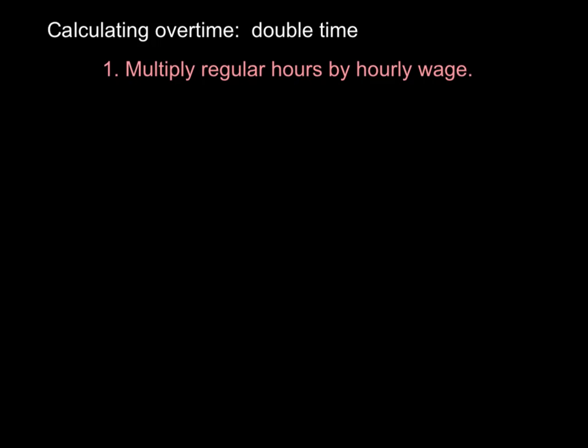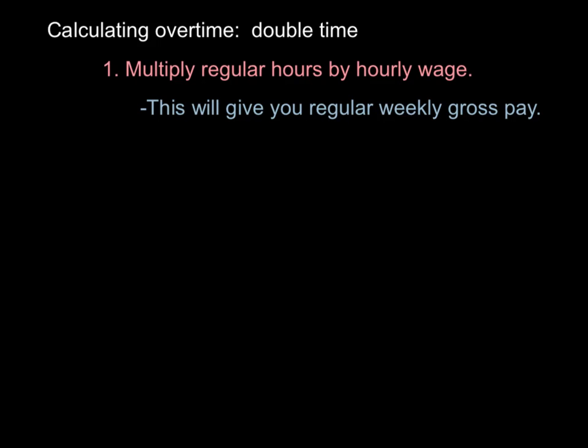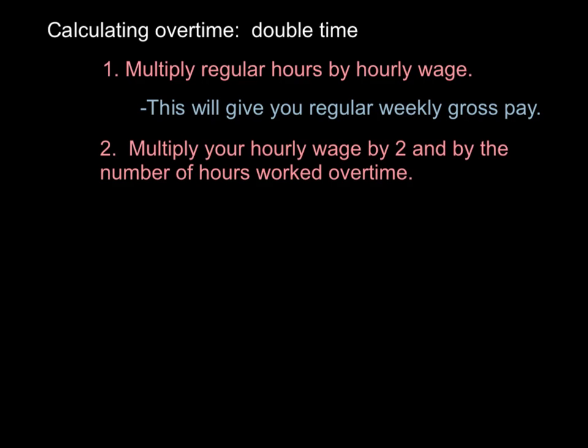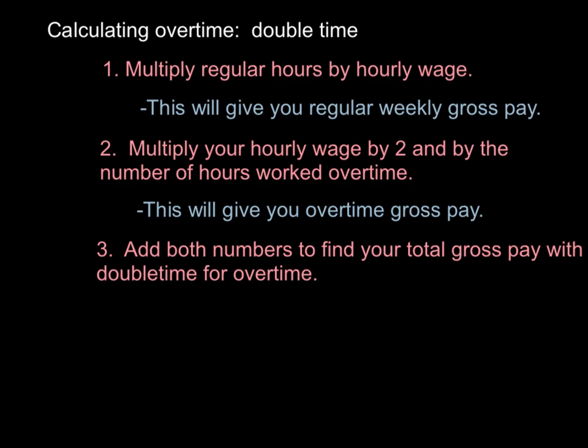Calculating Overtime — Finding Double Time Pay. You begin this the regular way: multiply regular hours by hourly wage to get your regular weekly gross pay. Next, multiply your hourly wage by 2 by the number of hours worked overtime. This will give you overtime gross pay. Add both numbers to find your total gross pay with double time for overtime.